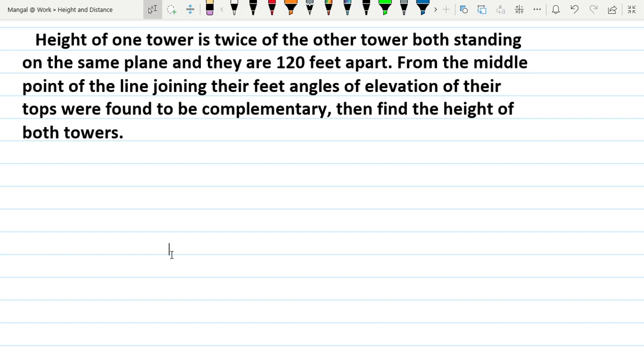So we have two towers on a plane standing upright. One tower is double the height of the other tower. The distance between them is 120 feet. From the meet point of the line joining their feet, the elevation angles to the tops are complementary at 90 degrees. Let's draw a diagram to solve this.